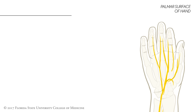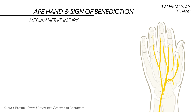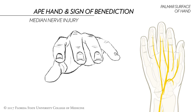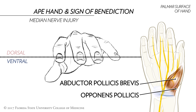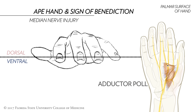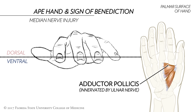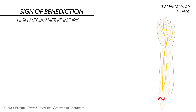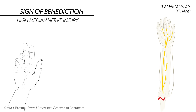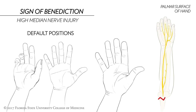Let's consider two hand deformities caused by median nerve injury: ape hand and the sign of benediction. In the normal hand at rest, digits 2 through 5 are loosely flexed and all are in the same dorsal-ventral plane. The thumb is held in a more ventral plane due primarily to the tonic action of the thenar muscles, abductor pollicis brevis and opponens pollicis. Following median nerve injury, the thenar muscles are paralyzed and the thumb is pulled into the plane of the other digits by the unopposed action of adductor pollicis. The position of the hand, with all of the digits aligned in the same dorsal-ventral plane, resembles the hand position of some lower primates, hence the term ape hand. The sign of benediction is seen in people with a high median nerve injury; however, in contrast to claw hand and ape hand, which are default positions of the injured hand at rest, the sign of benediction is an active sign that occurs only when a person with median nerve injury attempts to make a fist.